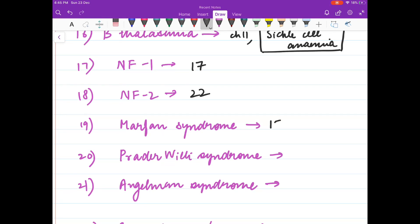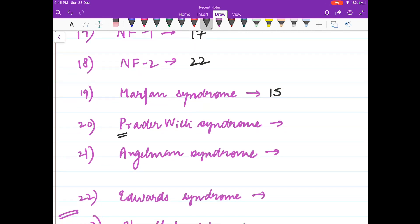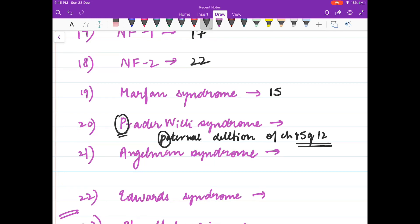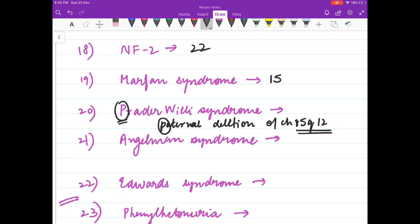Marfan syndrome, chromosome number 15. Prader-Willi, paternal deletion of chromosome 15 Q12. Remember P for Prader-Willi, P for paternal deletion. A for Angelman, and angels are our mothers, so it is maternal deletion of chromosome 15 Q12.